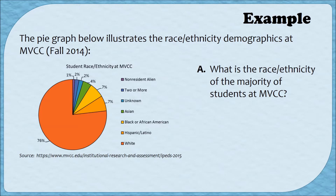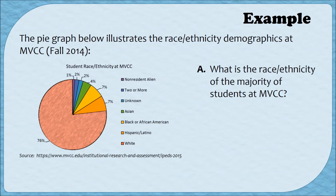Part A: what is the race or ethnicity of the majority of students at MVCC? To answer this question we need to look at the pie graph and find the biggest piece of the pie. It's pretty evident that the largest piece represents 76% of the students at MVCC. Based on the key, this wedge is red, and the red piece represents white students.